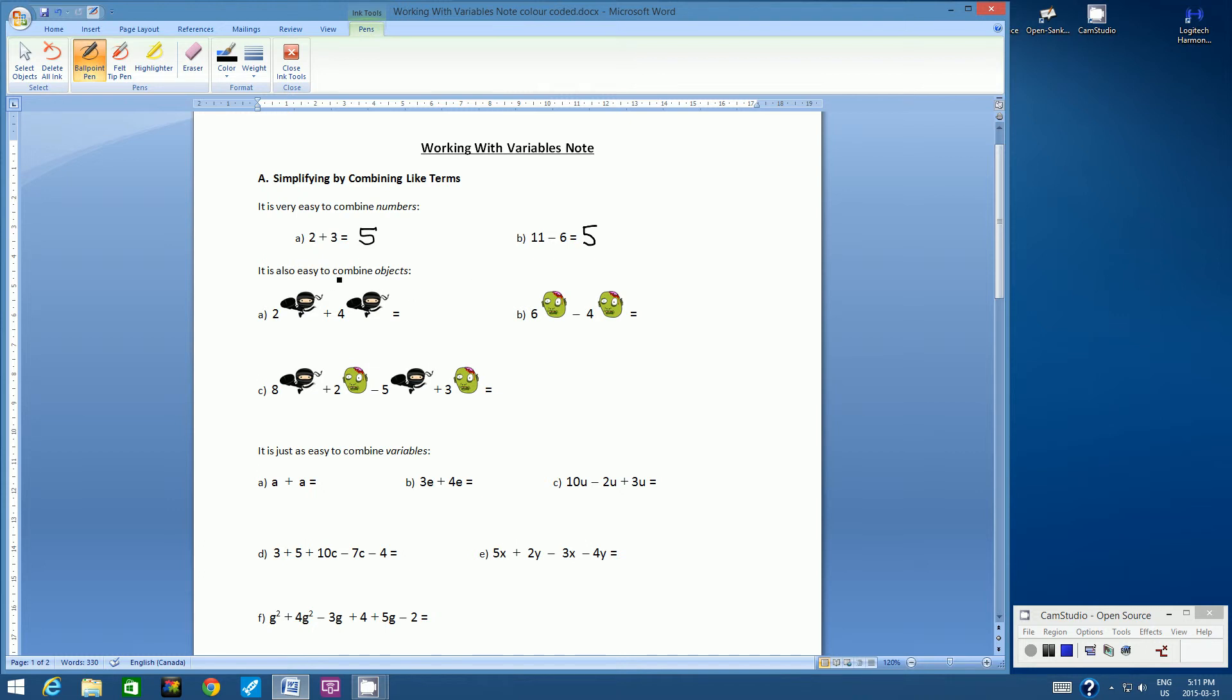So it is also easy to combine objects. So let's have a look at example A. 2 ninjas plus 4 ninjas equals 6 ninjas. Example B, 6 zombies subtract 4 zombies equals 2 zombies.